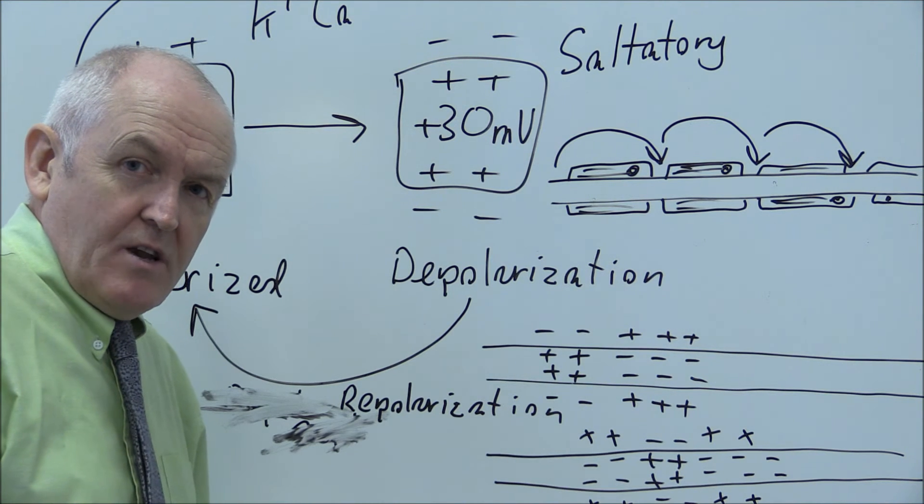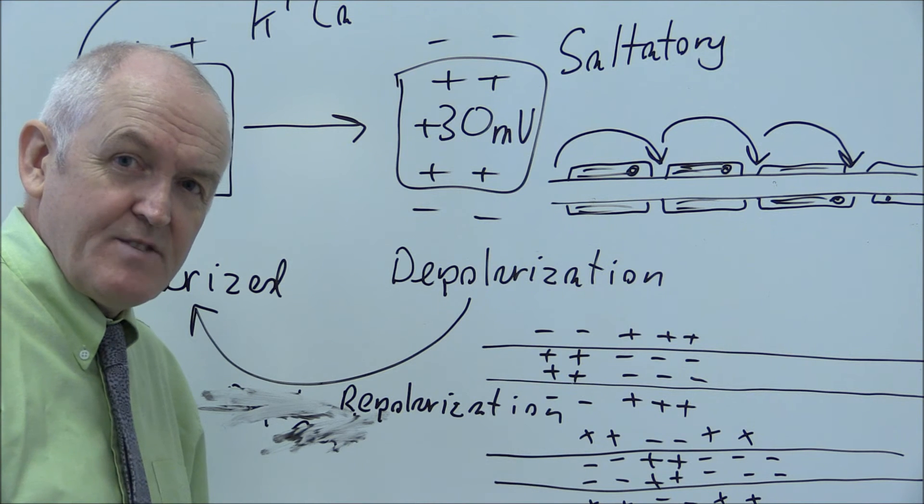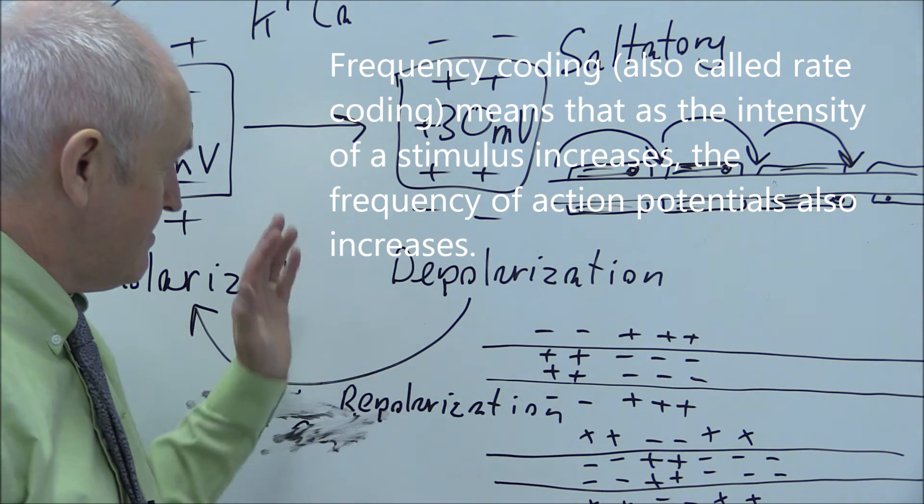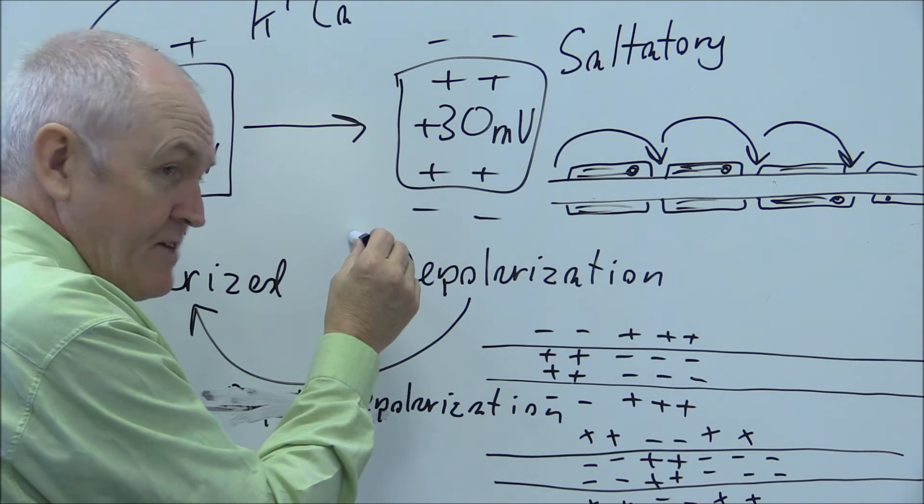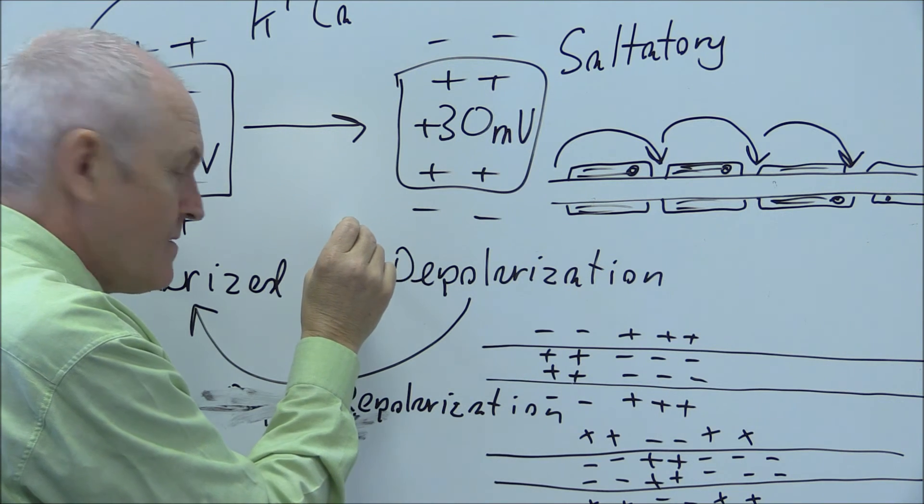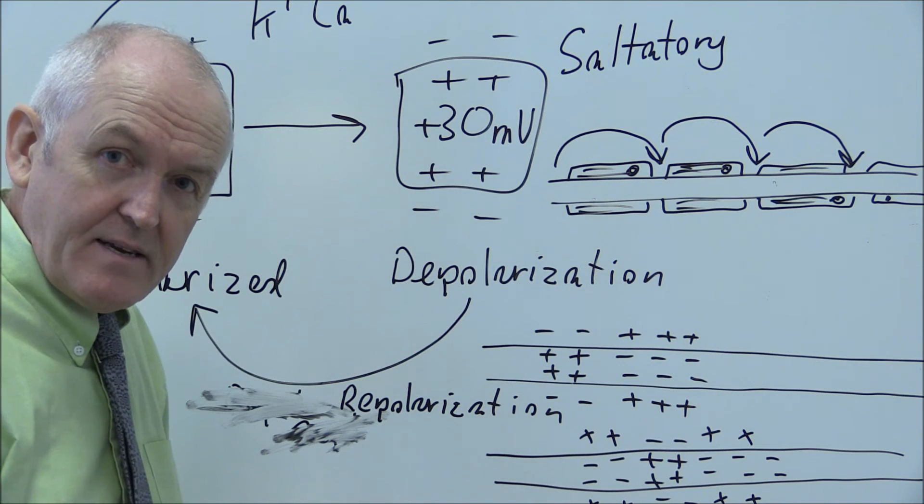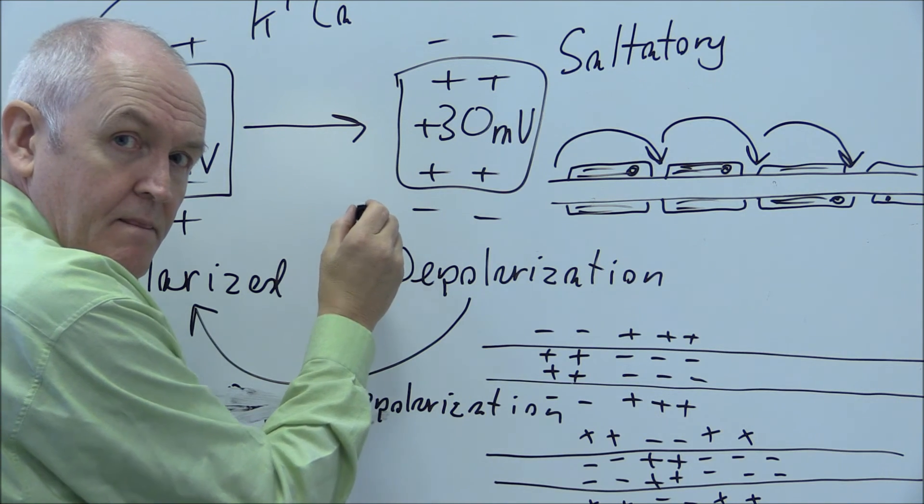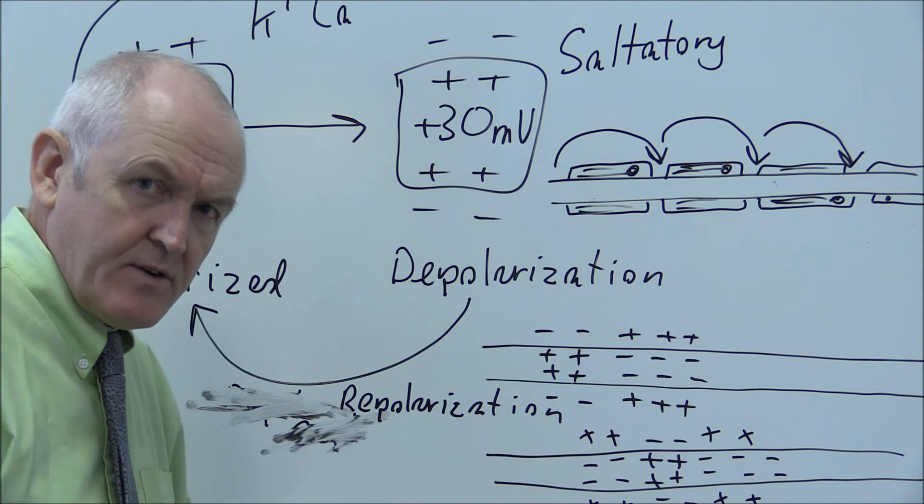But what the nervous system does a lot is what is called frequency coding. It codes the messages by the frequency of the nerve impulses. So, for example, if you wanted to have, or you were hurting your finger a little bit, and you had a little bit of pain, then the pain receptors, the nociceptors, might just generate a nerve impulse every second. Whereas if you had a severe pain, the nerve impulses would be generated much quicker. You would have more impulses per second. This is called frequency coding.